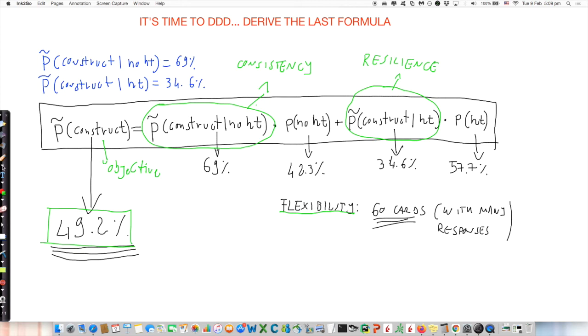Let's write it here. How to compare two builds. Number one: you need to know how many hand traps opponent is playing and which hand traps. Number two: you need to compute with the hypergeometric calculator, compute P of construct for each build.